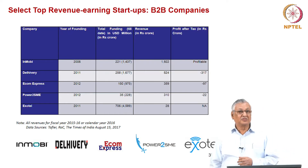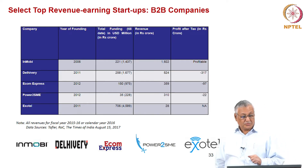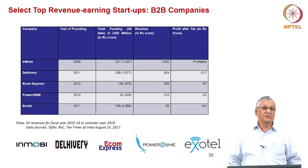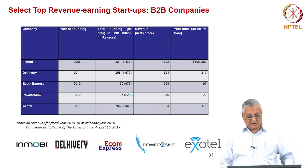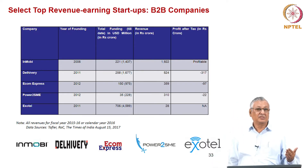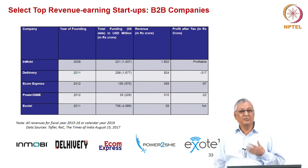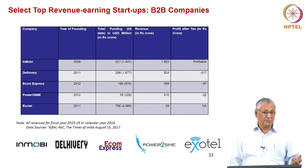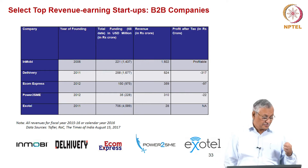Then we have business-to-business companies — Inmobi, Delhivery, Ecom Express in logistics, Power2SME, ExoTel. Inmobi, rated as one of the top 50 disruptively innovative companies globally, has become profitable. The loss levels in these B2B companies are somewhat less compared to business-to-consumer internet companies. So there is a difference — you can be successfully and prudentially profitable in business-to-business startups, whereas in B2C companies you can be very successful in terms of footfalls and scale-up.